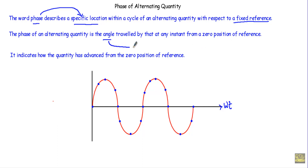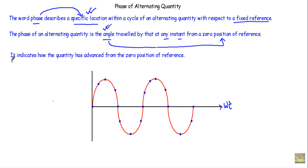We measure an angle with respect to a fixed reference point that is traveled by that alternating quantity. In short, the phase of an alternating quantity describes a specific location in terms of an angle traveled by that alternating quantity at any instant from a zero position of reference. It indicates how much the alternating quantity has advanced from the zero position of reference. As we determine the phase in terms of angle, the phase will have a unit of either radian or degree.